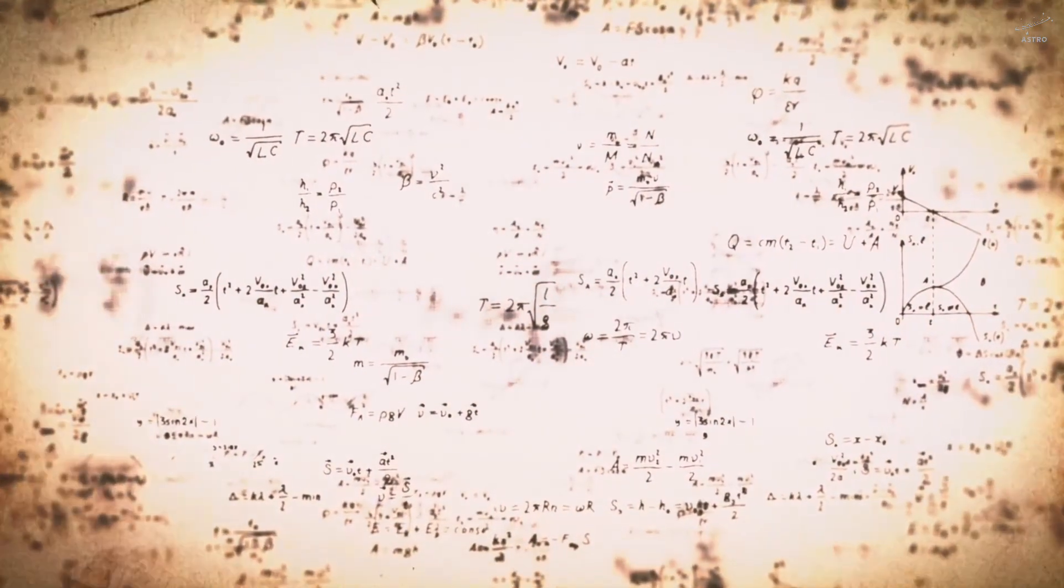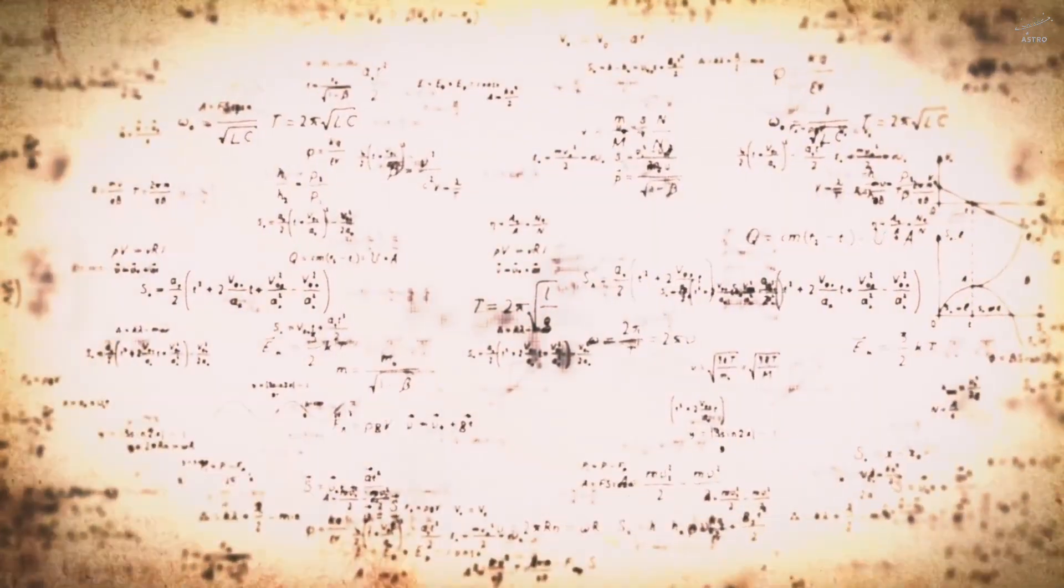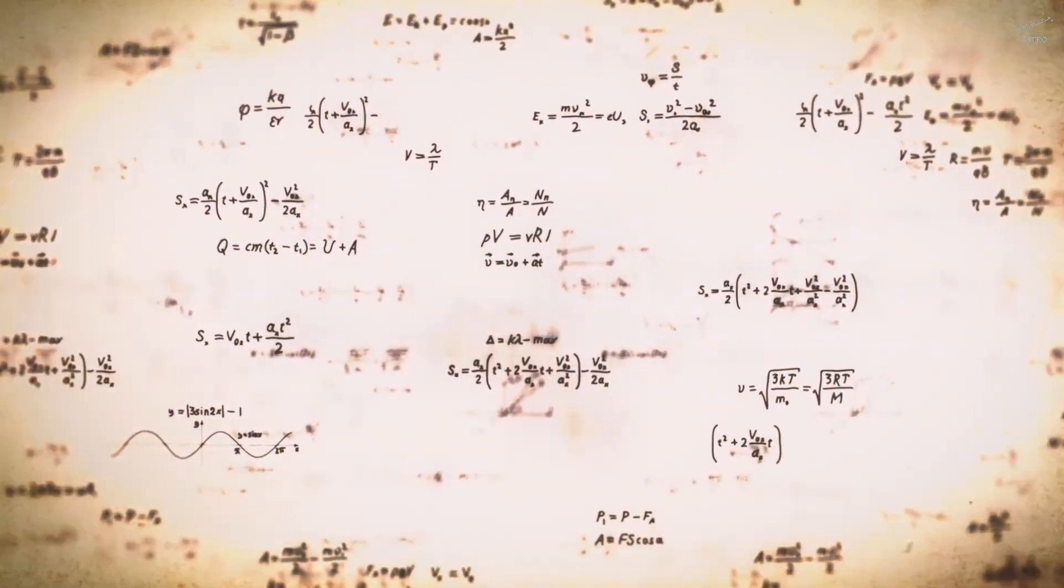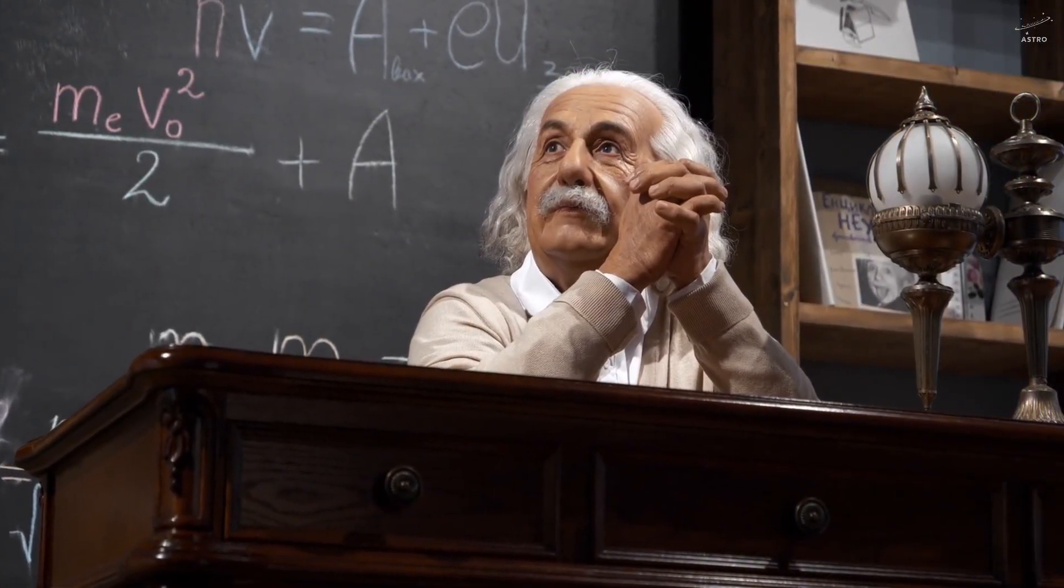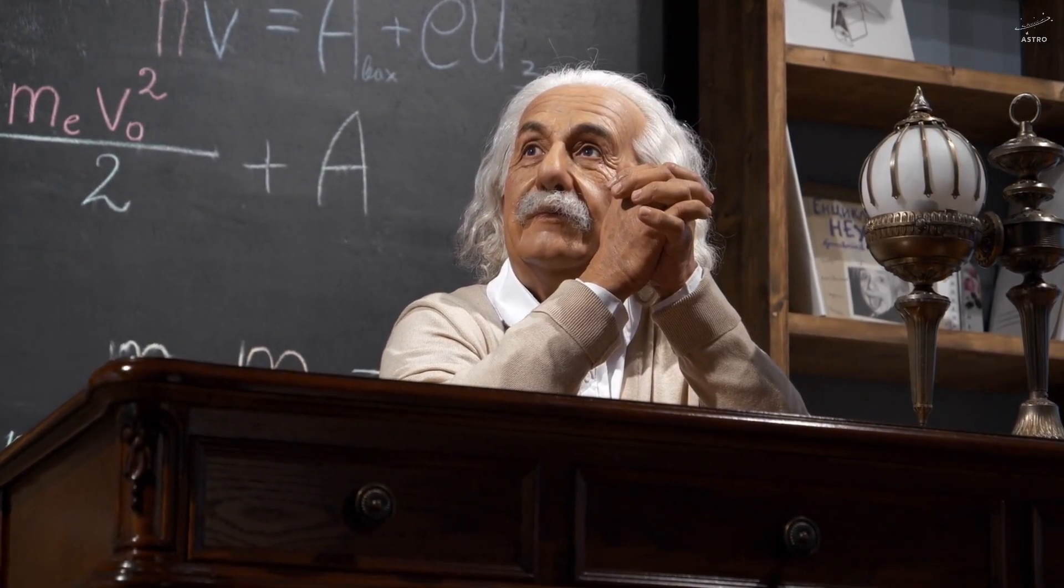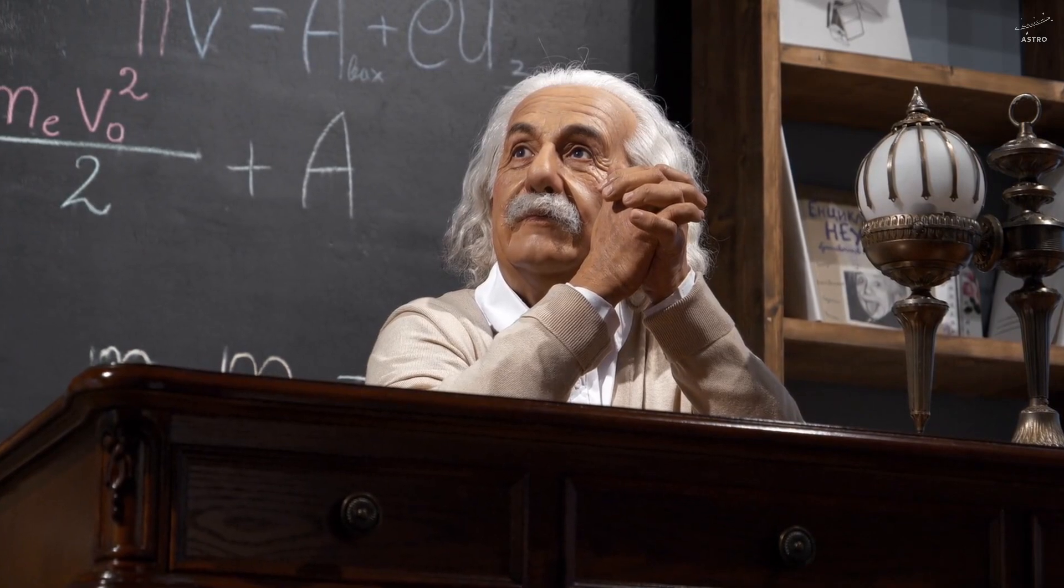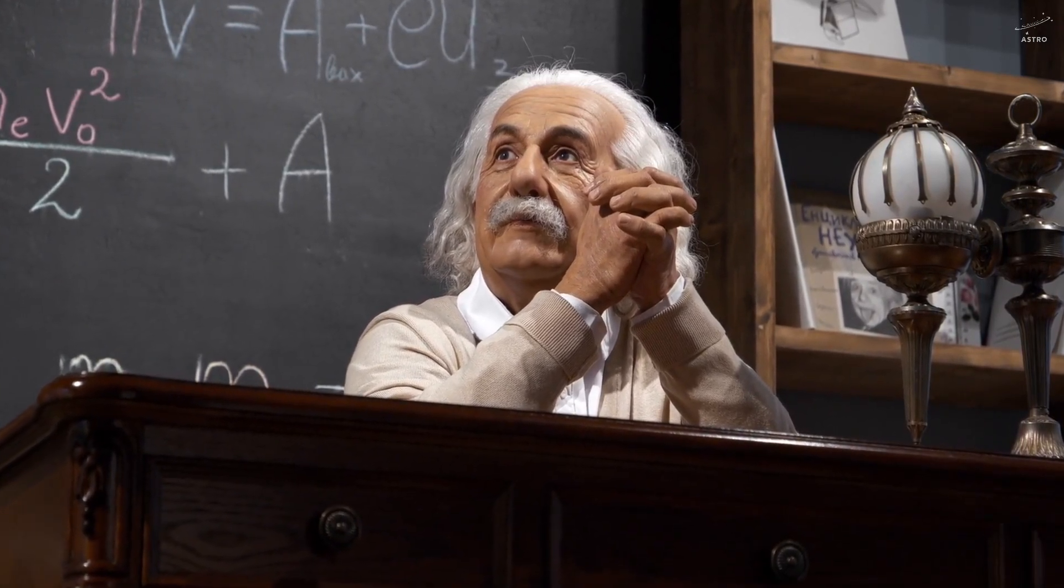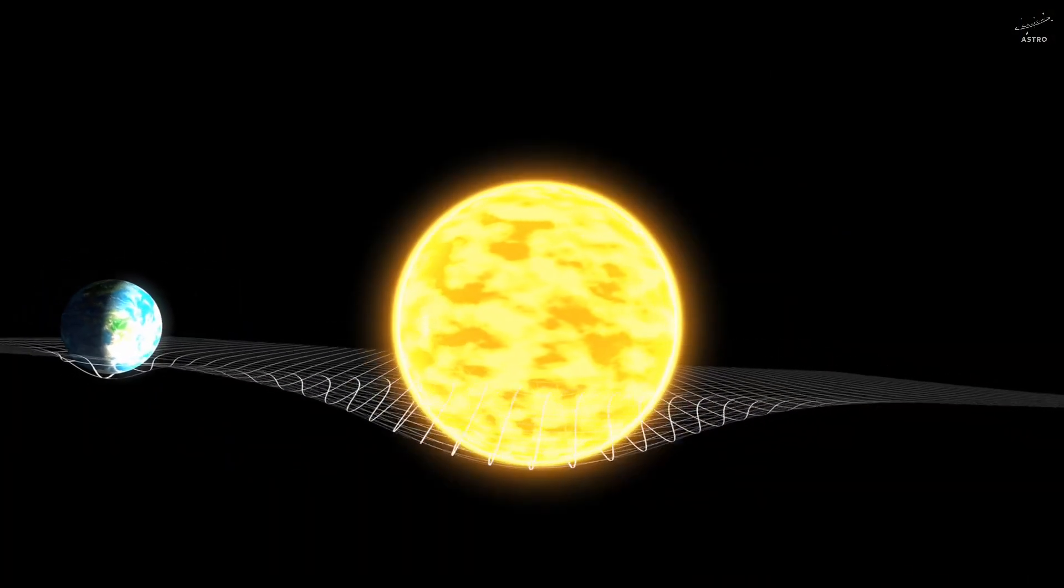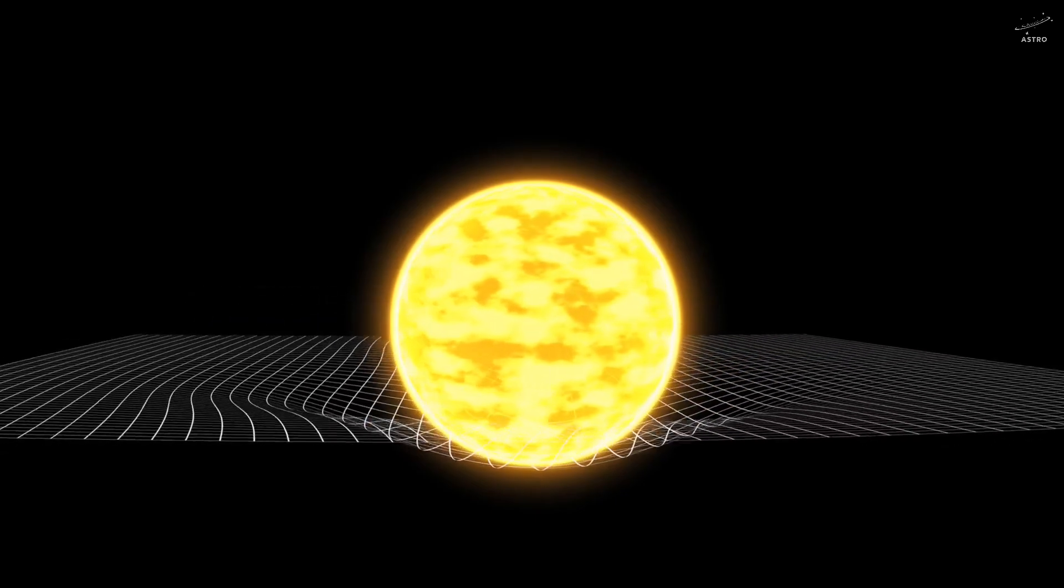Let's go back to where it all began. With Isaac Newton. He helped us picture gravity as an invisible force. A pull, drawing objects toward one another. But over two centuries later, Albert Einstein turned that idea upside down. So radically. That it reshaped how we understand the universe itself. Einstein didn't say gravity pulls. He said something even more astonishing. Gravity isn't a force at all. Instead, it's the shape of space-time.